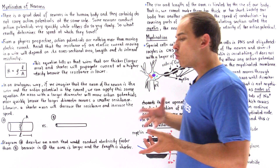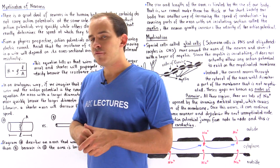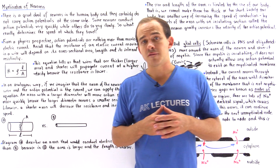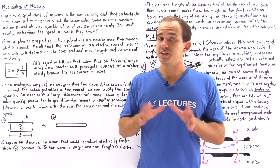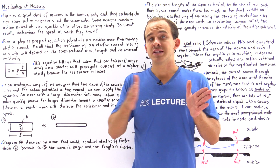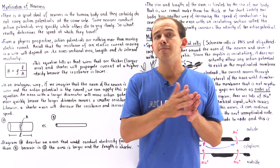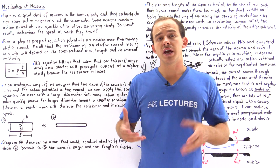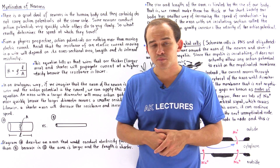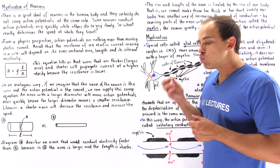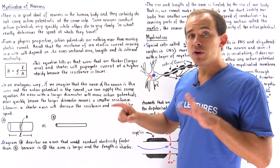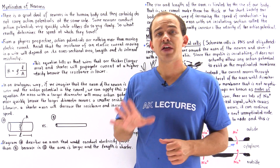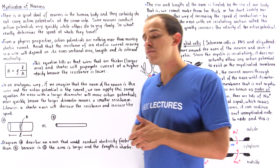Let's begin by recalling some physics. If we study the movement of the action potential along the axon from a physics perspective, we see that the action potential is nothing more than a moving electric current, and the axon is nothing more than a biological wire. What determines the velocity with which the current moves inside the wire is the resistance of that wire to the flow of that current.